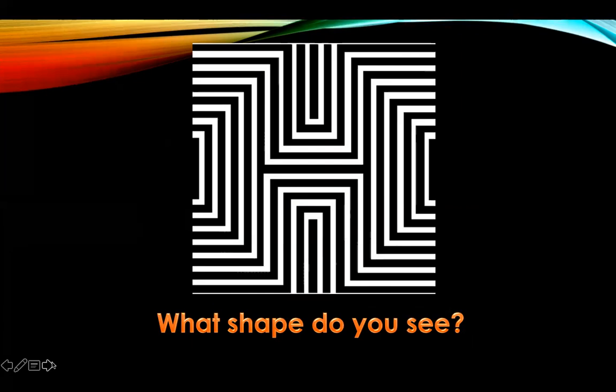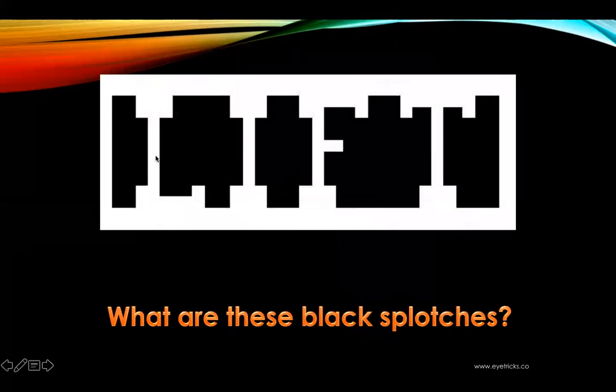What shape do you see? If you answered diamonds, you are incorrect. There is not a single diamond in this picture. This is an illusion. The placement of these rectangles gives the illusion that there is a diamond in the center of this picture, but there is actually no diamond found.